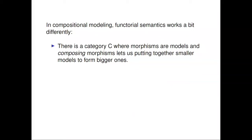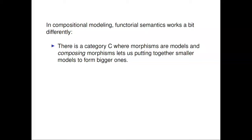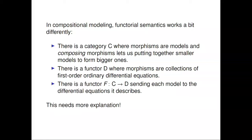In our approach, the functorial semantics works a little differently. The category will have morphisms which are models, and composing those morphisms means sticking together two models to form a bigger model. And there's a category D where morphisms are bunches of differential equations. You may never have thought about a category where the morphisms are differential equations, because you've probably never thought about composing differential equations — but that's what I'll have to explain. Then there's a functor from C to D, sending a model like a stock flow diagram to the collection of differential equations it describes, preserving composition.